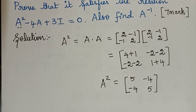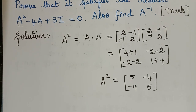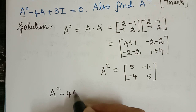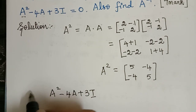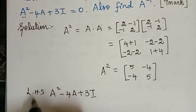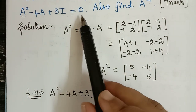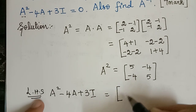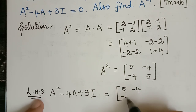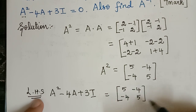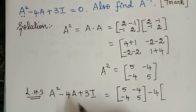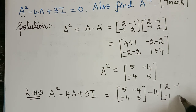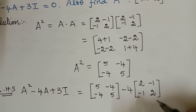Now we substitute into the equation. We have to prove A squared minus 4A plus 3I equals 0. Substituting: A squared is [5, -4; -4, 5], minus 4 multiplied by matrix A which is [2, -1; -1, 2], plus 3 multiplied by identity matrix I.